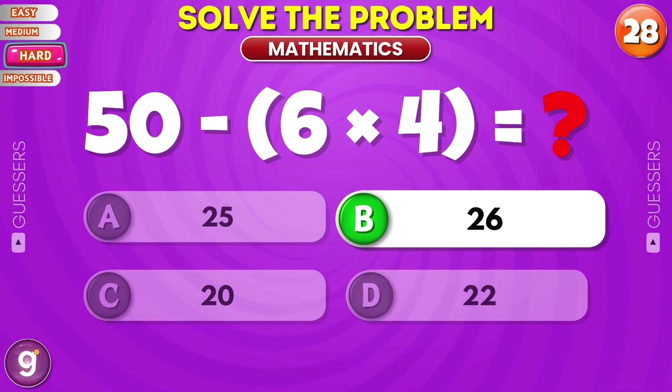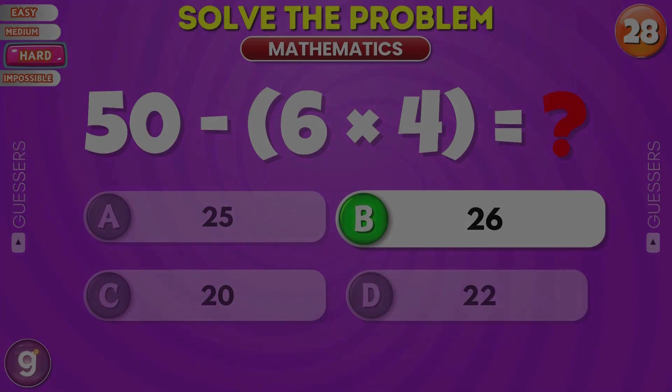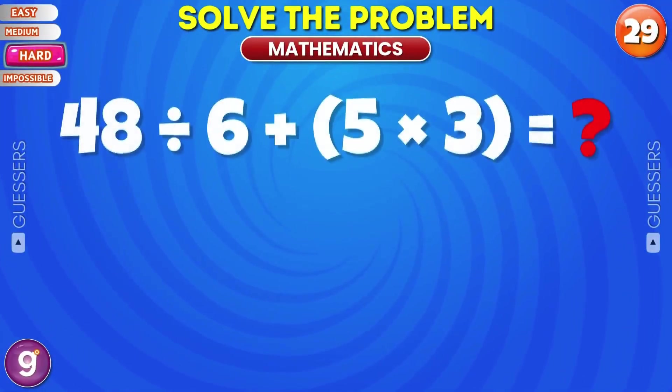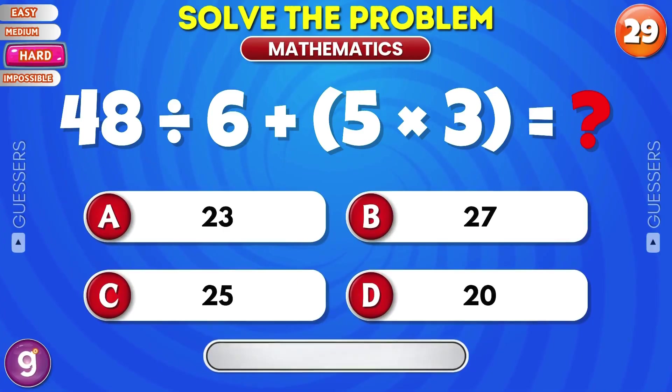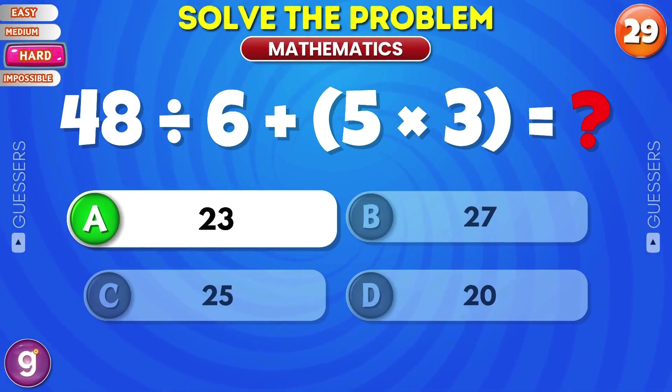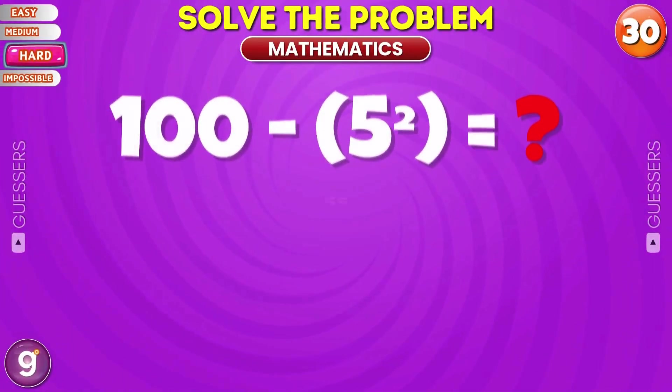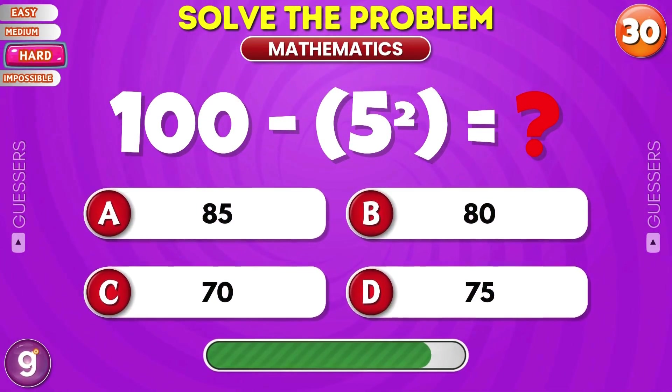What's 50 minus 6 times 4? 26. What's the result of 48 divided by 6 plus 5 times 3? 23. What about 100 minus 5 squared? 75.